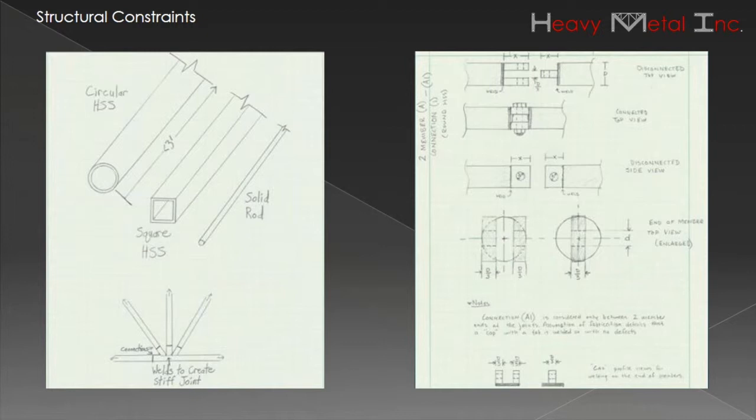For each bolt nut connection, the hardware must be in contact with the member and the bolt threads must protrude past the nut. Any connection violation will result in a penalty of 3 minutes being added to the construction time.